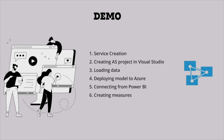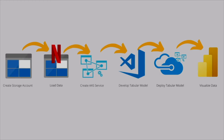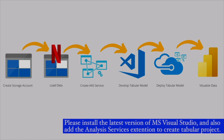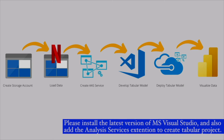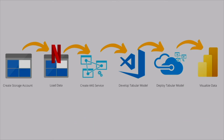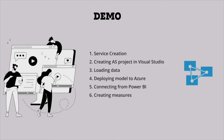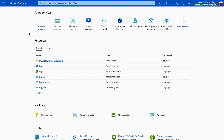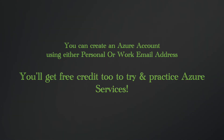Now it's time for the demo. During the demo, we are going to create certain Azure services — a storage account as well as an Azure Analysis Services server. Then we'll create our project in Visual Studio, which I have already installed. If you haven't installed Microsoft Visual Studio, please do so and also install the extension for Analysis Services. We will then ingest data, deploy our model to Azure Analysis Services, and connect it with Power BI. Let's head over to my Azure portal. If you don't have an account, please create one for free — you can use your personal or work email, and if creating for the first time you will get free credits.